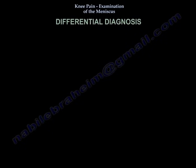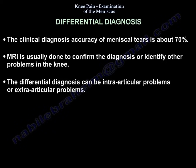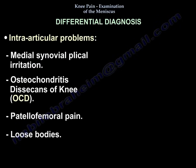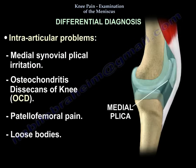The clinical diagnosis accuracy of meniscus tear is about 70%. MRI is usually done to confirm the diagnosis or to identify other problems in the knee. The differential diagnosis can be intra-articular or extra-articular problems. Intra-articular problems include medial plica.